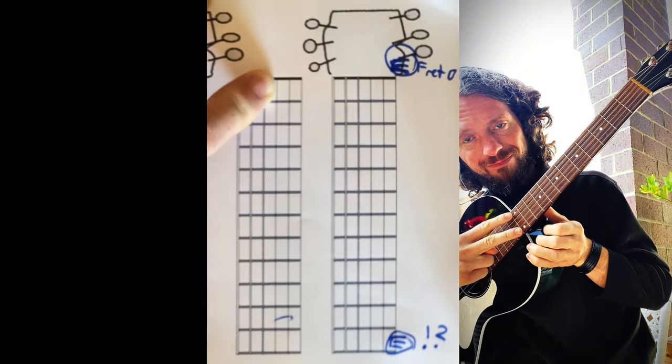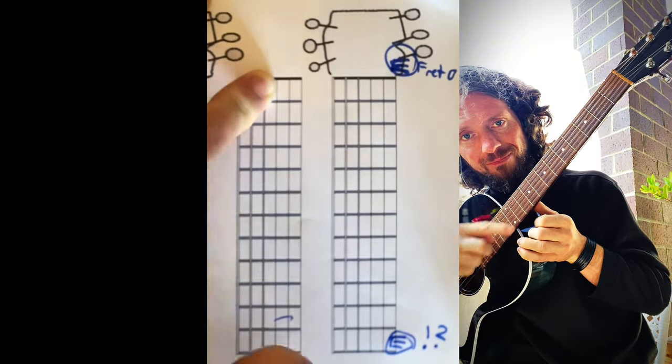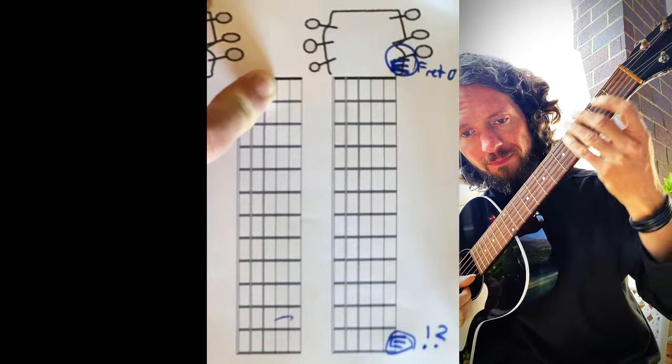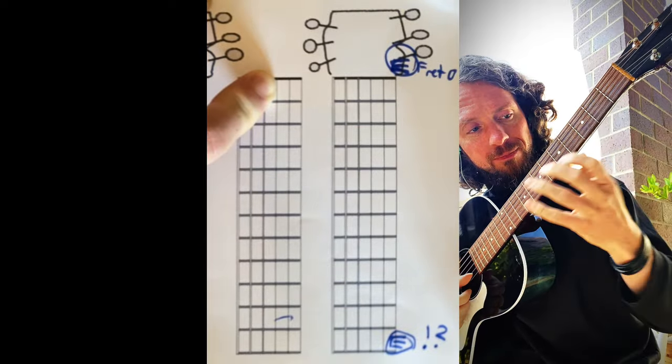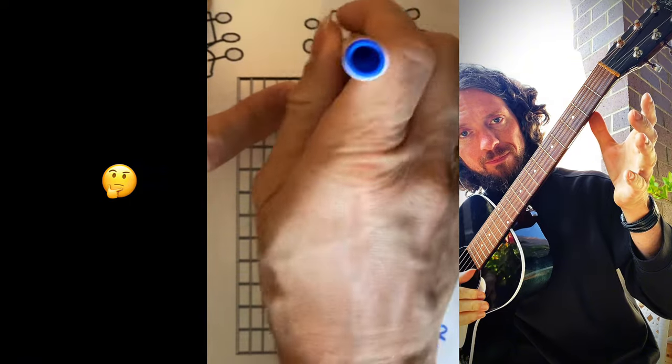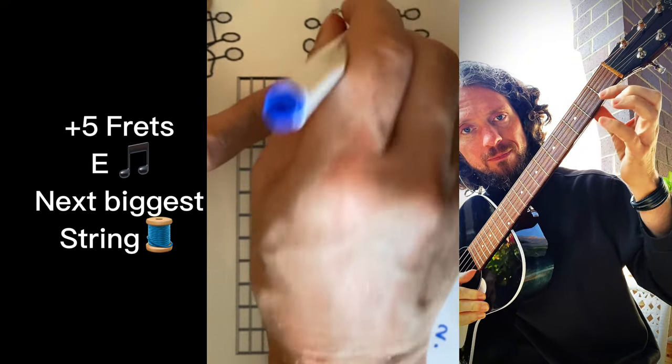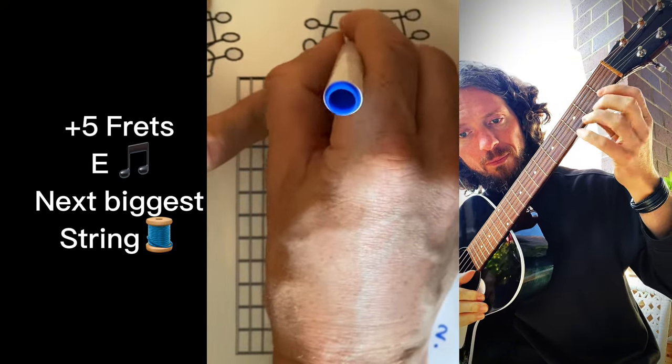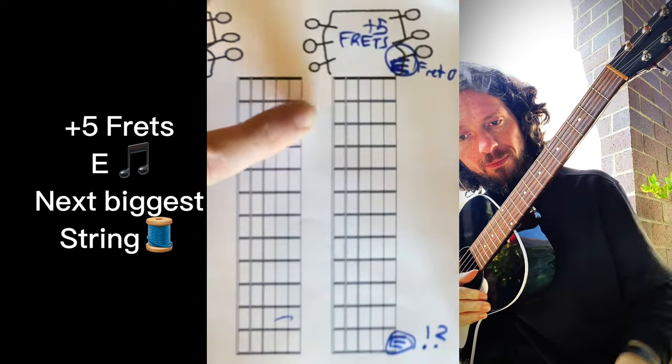But as you go across the strings, there is an interesting pattern. You can find E's crossing strings in a different pattern. This is where it gets a little bit more involved. Generally it's plus five frets, except for one special combo I'll show you what I mean.